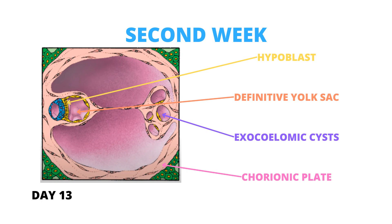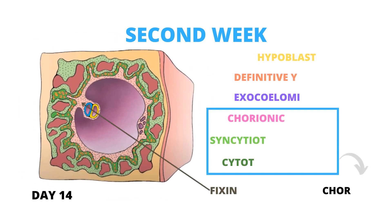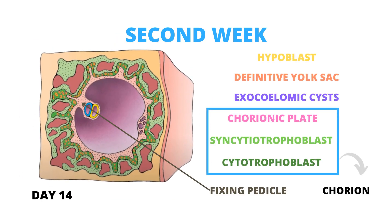The extraembryonic mesoderm lining the interior of the cytotrophoblast is renamed the chorionic plate. The chorionic plate plus the syncytiotrophoblast plus the cytotrophoblast together are known as the chorion, and the chorion forms the wall of the chorionic sac, where the definitive yolk sac and amniotic cavity are suspended by the attachment pedicle. This attachment pedicle, with the development of blood vessels, becomes the umbilical cord.